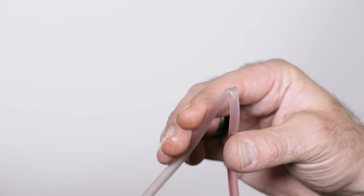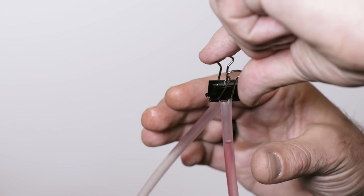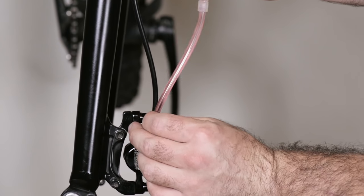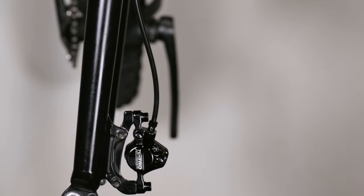Use a clip or clamp to pinch off the overflow hose. This will prevent fluid from draining while you remove the syringe from the caliper and replace the bleed port plug.